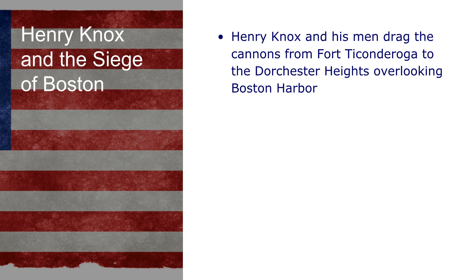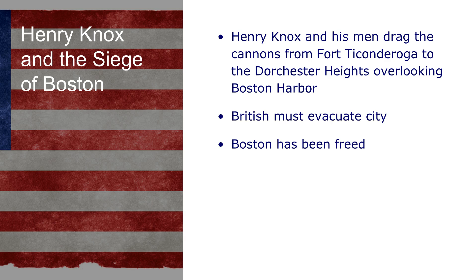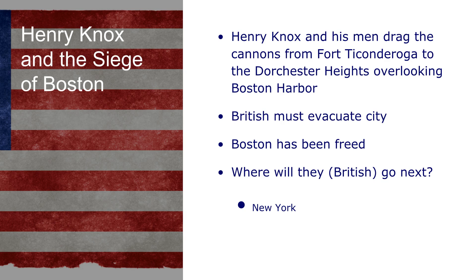Henry Knox — who would become an important artillery specialist for the Continental Army — took his men and dragged those 59 cannons all the way from Fort Ticonderoga down to Dorchester Heights, which overlook Boston Harbor. Faced with that artillery threat, the British had to evacuate the city, and Boston was freed. After nearly a year of fighting, the British had just been kicked out of Boston. The question then became where they would go next — and the answer was New York, which was a loyalist stronghold.